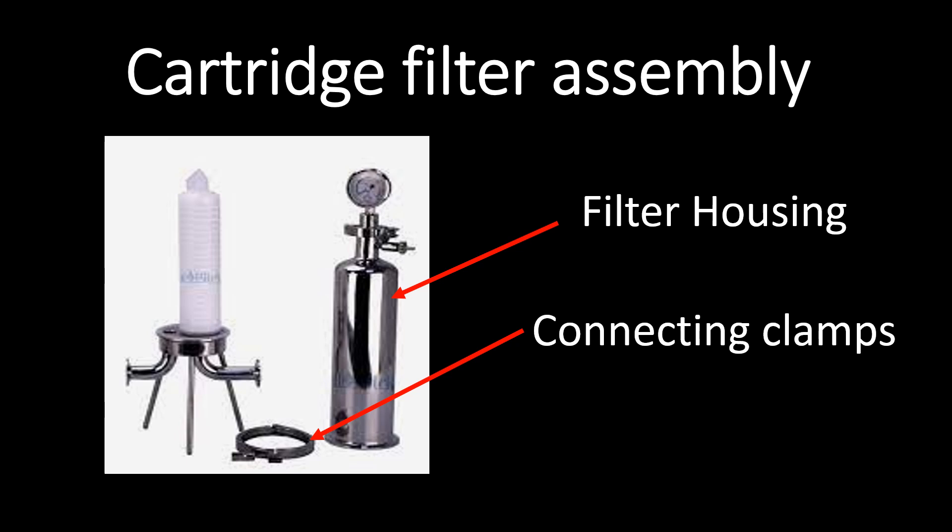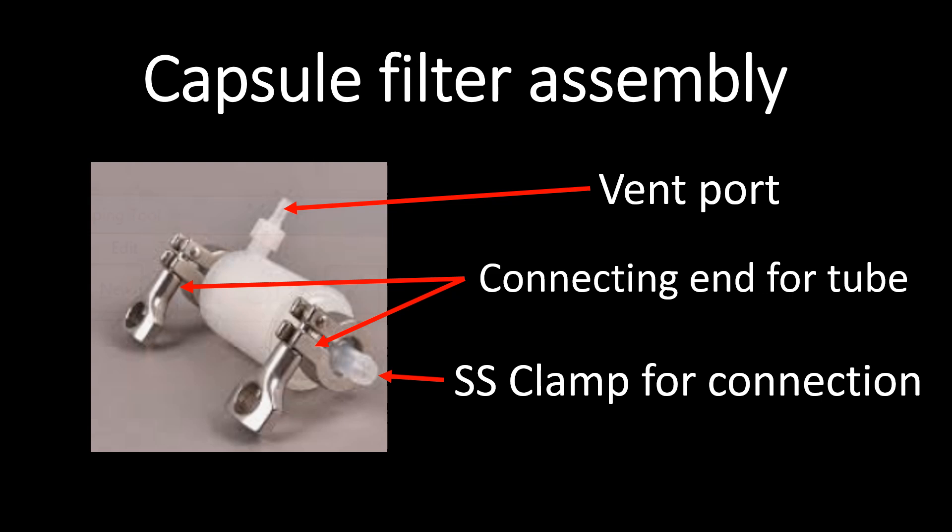Commonly, a cartridge filter assembly looks as shown in this picture. It mainly contains a filter housing, which is commonly made up of stainless steel, and connecting clamps. Note that cartridge filters do require a separate filter housing as part of their assembly.